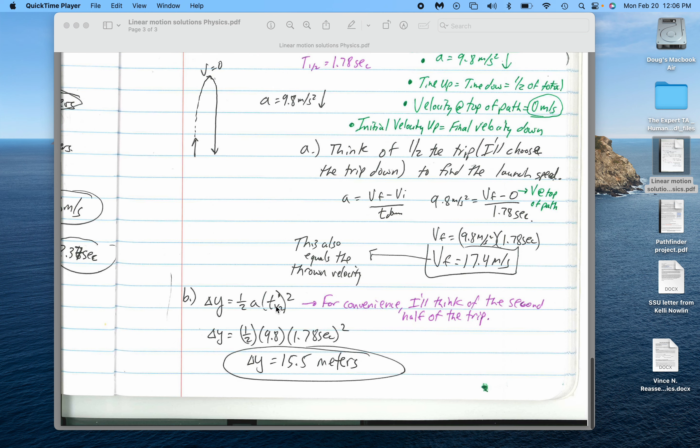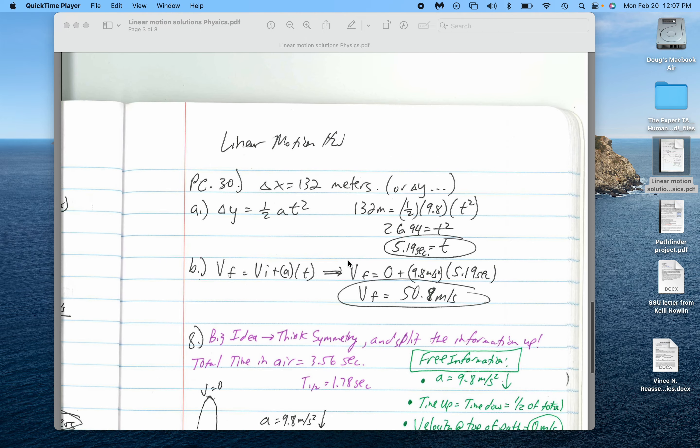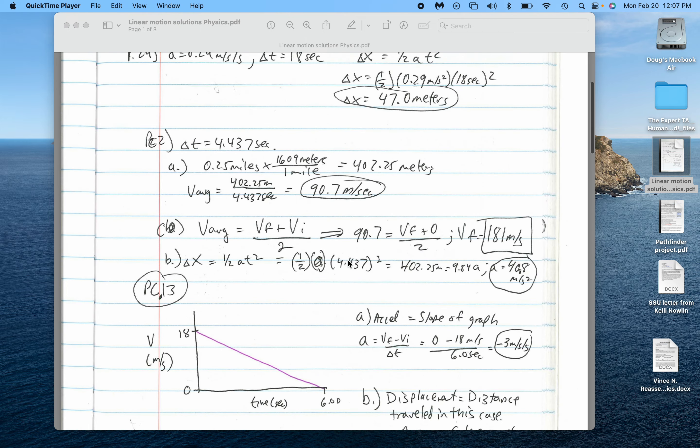This delta Y equals one-half A times one-half T squared, because it's only half the time when it's falling. So I end up getting 15.5 meters. Again, hopefully we can go over that in class, and you're attentive enough where that makes sense. Thanks.